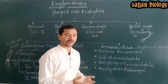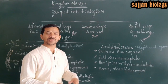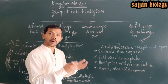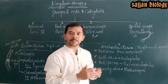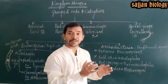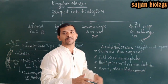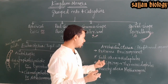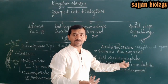Kingdom Monera includes two major types of bacteria: Archaebacteria and Eubacteria. Archaebacteria are the first-formed or primitive bacteria. They have a specialized structure and a distinct bacterial cell wall composition, modified to allow survival in extreme environmental conditions.